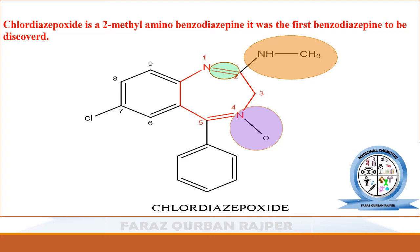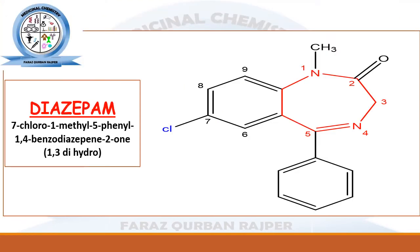For chlordiazepoxide, the key structural features to remember are: methylamine group at position 2, unsaturation at positions 1-2 and 4-5, and N-oxide at the fourth nitrogen atom. Chlordiazepoxide is the first benzodiazepine discovered, and all other benzodiazepines are considered derivatives or metabolites of chlordiazepoxide.